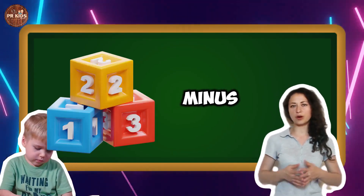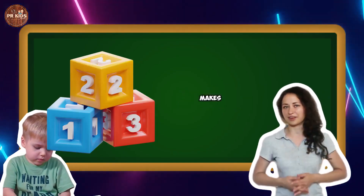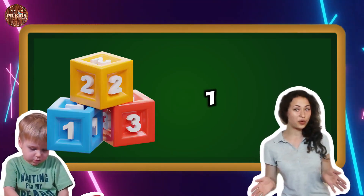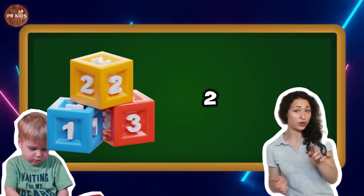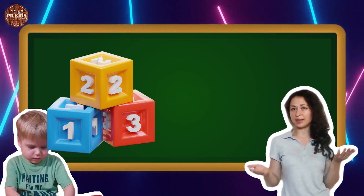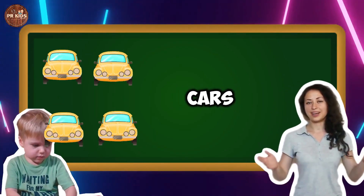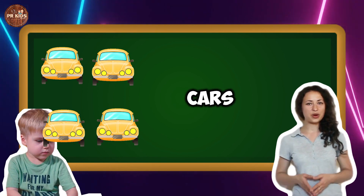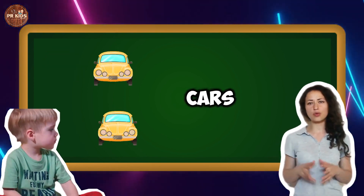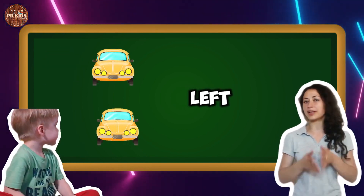Three blocks minus one block makes two blocks. One, two — two blocks left. Four cars minus two cars make two cars. Two cars left.